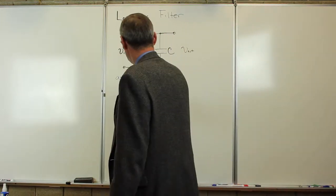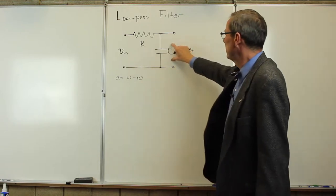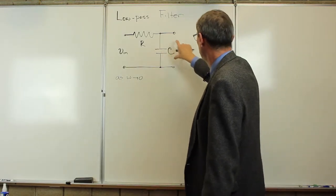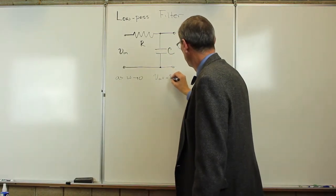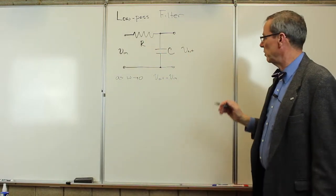We can look at a couple of limits as omega goes to zero. At very low frequency, this looks like a very large resistance, so the entire output voltage is across the capacitor. V out equals V in. It's just going to let the signal through.